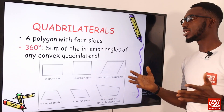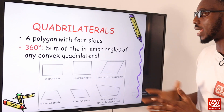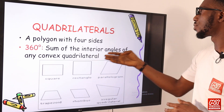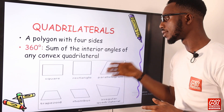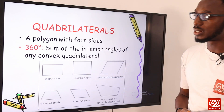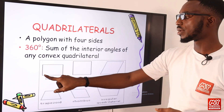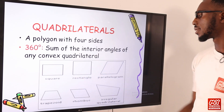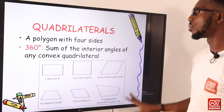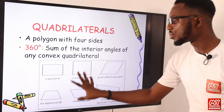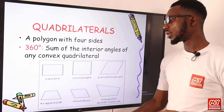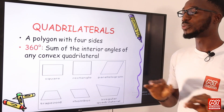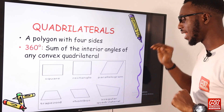A quadrilateral is a polygon with four sides. The sum of the interior angles of any convex quadrilateral should give you 360 degrees — for example, 90 + 90 + 90 + 90 = 360. That is a general property we should know.